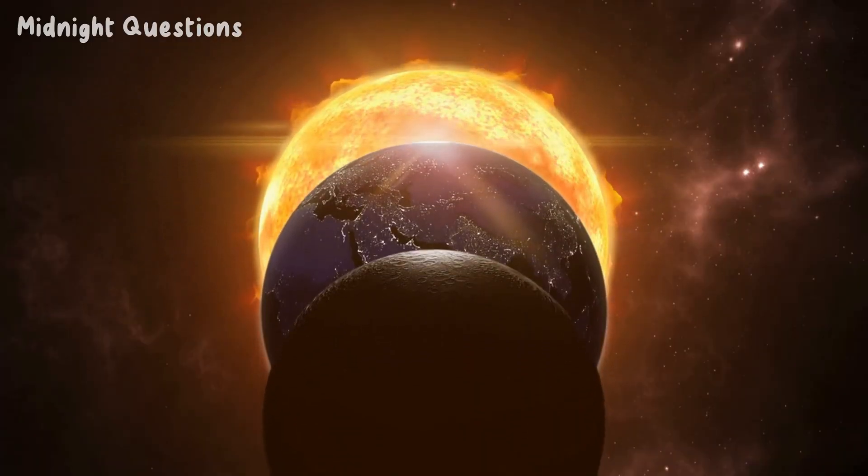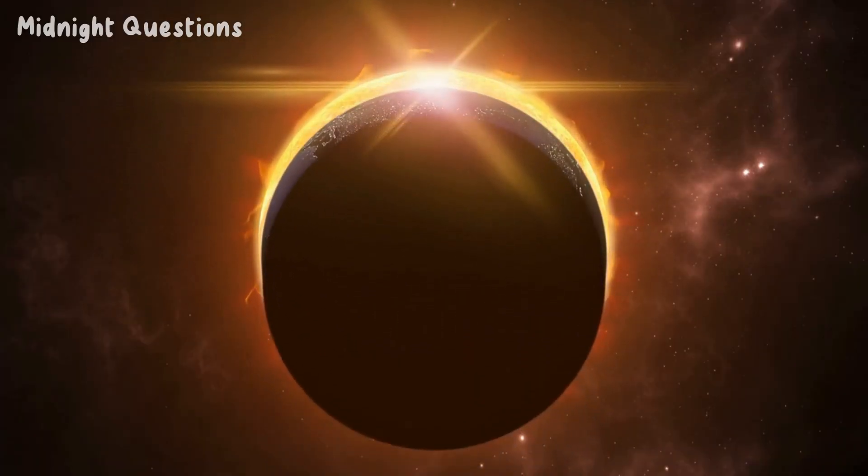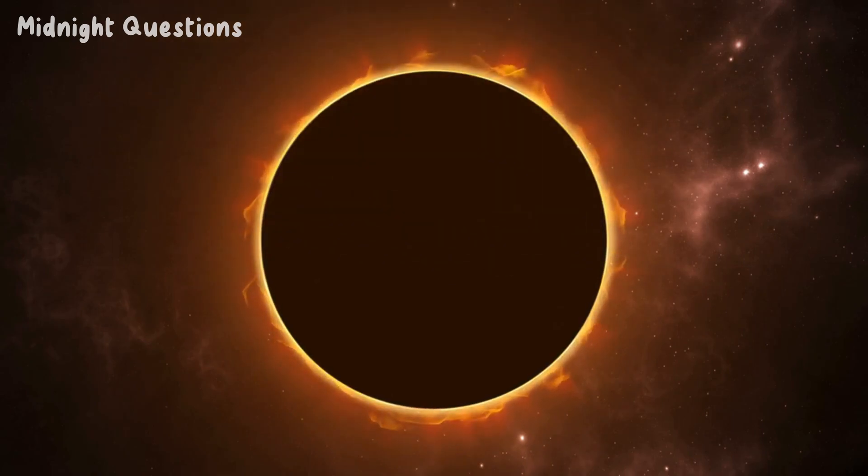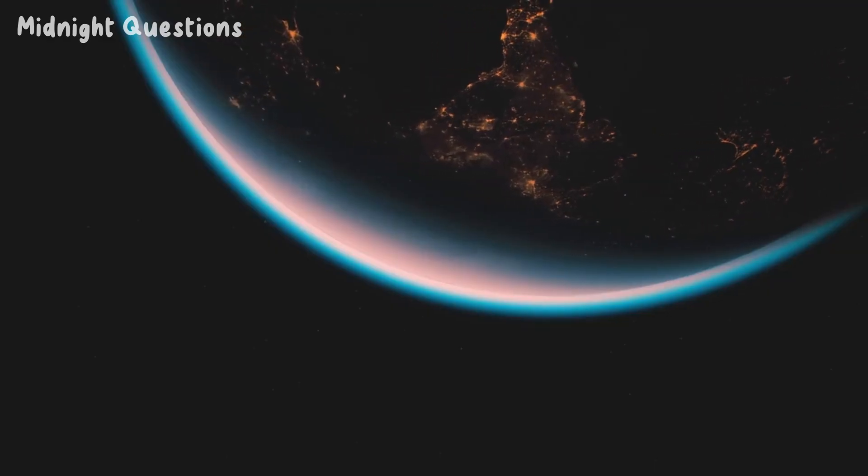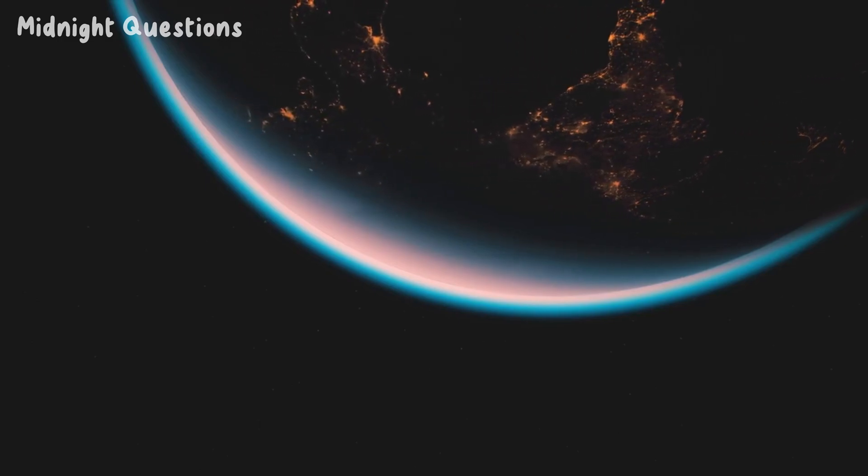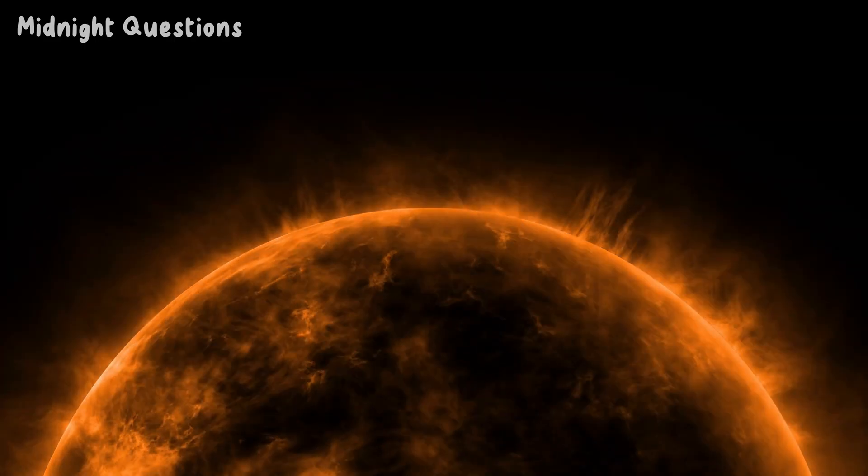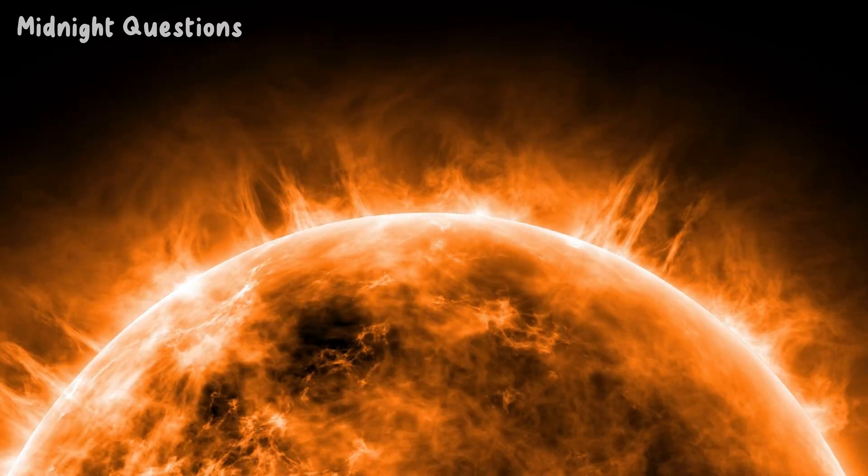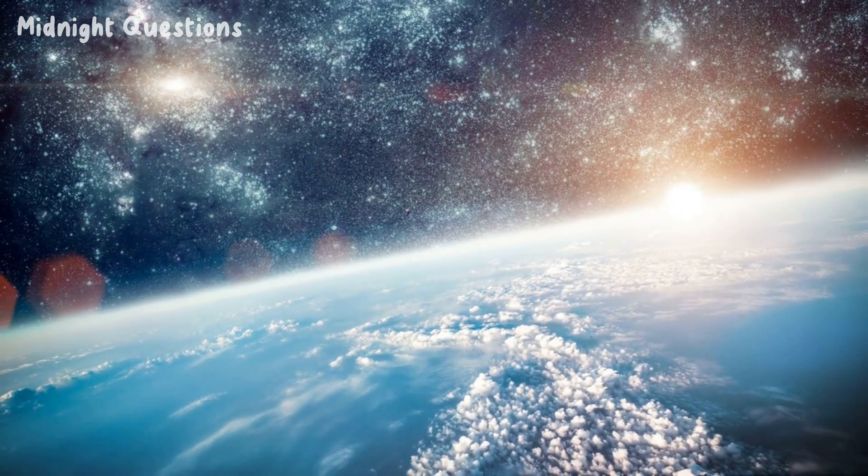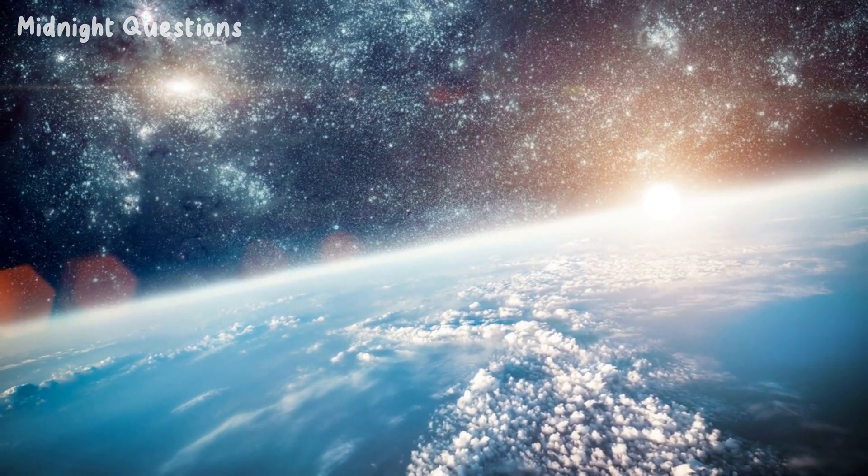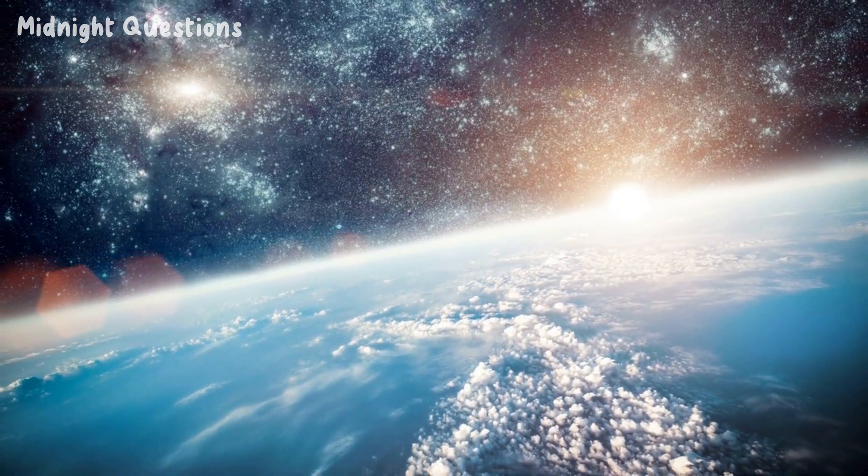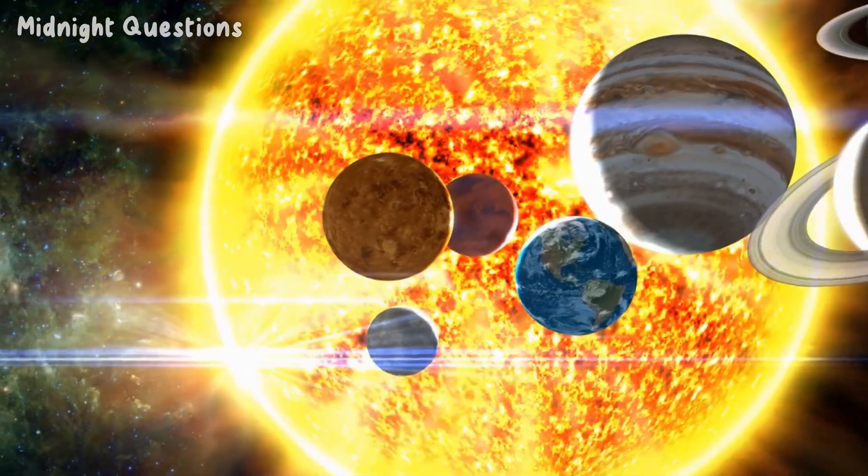In conclusion, the Earth's core is hotter than the Sun due to a combination of radiogenic heating and gravitational potential energy. The solid nature of the Earth allows for the formation of convection currents, which help to transport heat from the core to the surface. This incredible phenomenon not only tells us about the nature of our planet but also provides important clues about the formation and evolution of the solar system.